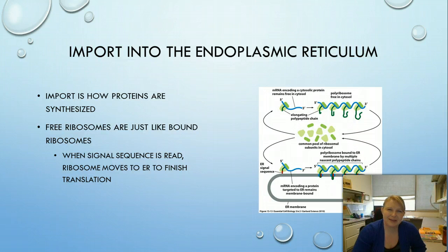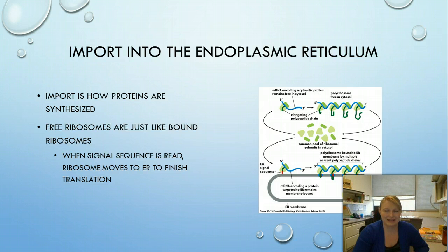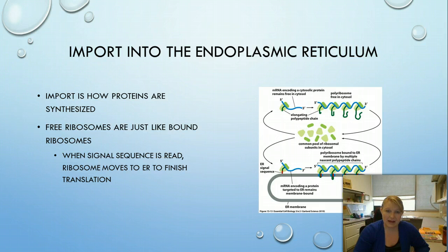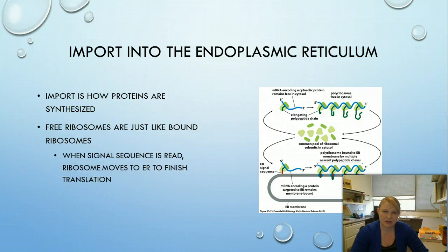The ER is a somewhat different case. We know the rough ER makes its own proteins, but proteins destined for the ER that are made in the cytosol must also be imported. They're actually synthesized as they're imported — free ribosomes bind to the ER and feed the protein through as it's synthesized. So it's a hybrid situation where the ER and free ribosomes work together. Those are the three main types of organelle import; vesicle transport will be covered in the next topic.